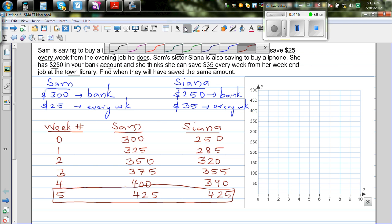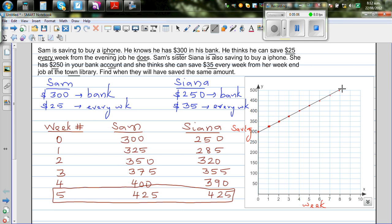Let's do it in the second way, the graphical method. So first let's draw the graph of Sam. Week 0 he has $300. On the x-axis I'm taking the week and on the y-axis I'm taking the saving. So it starts with $300, then first week $325, $350, $375. This will go in a straight line. So this is the graph of Sam.